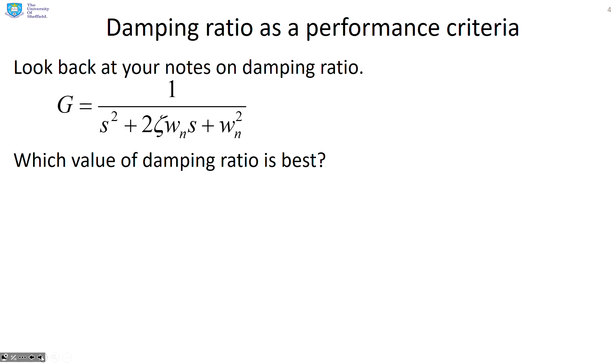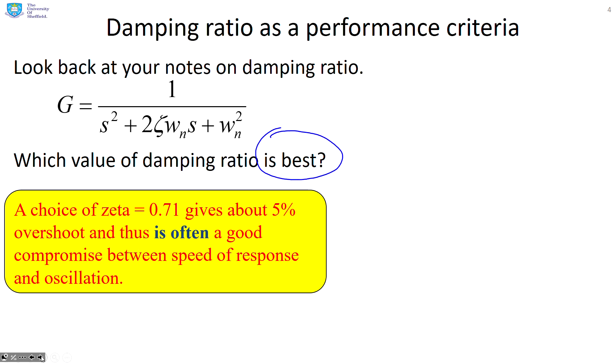Damping ratio as a performance criteria. So if you look at your notes on damping ratio, which will have been focused mainly on second order systems, the question is, what value of damping ratio is best? Now, what you will see is a choice of zeta of about 0.71 gives an expected overshoot of around 5% and is therefore a good compromise between speed of response and oscillation. Now, nobody is saying this is best. What they're saying is this is often a good choice.